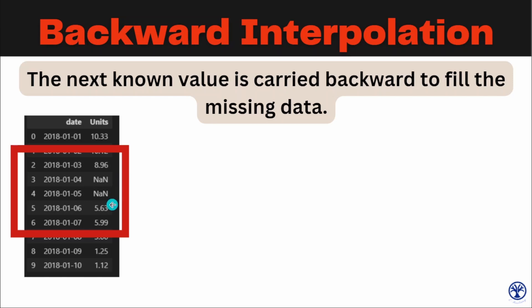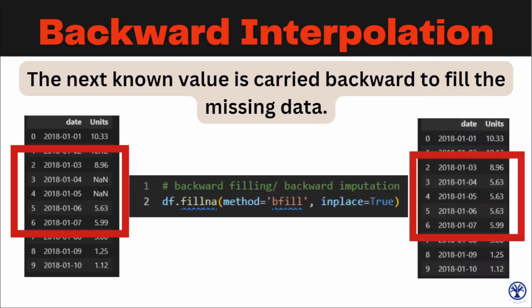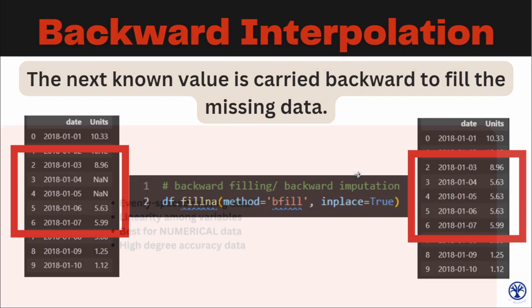According to the definition of backward interpolation, we move the next known value backward to fill the missing entries. The third and fourth IDs, which are null, get filled with 5.63. The Python command uses dataframe.fillna(method='bfill'), and then we update the data frame. Again, there is no need to install any module other than the pandas library.